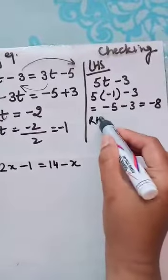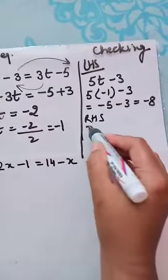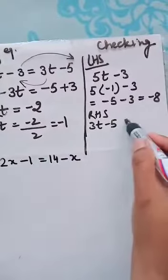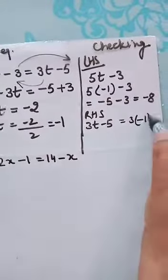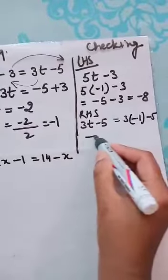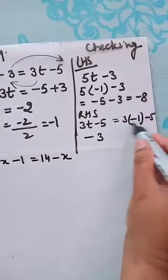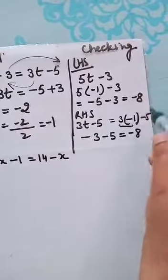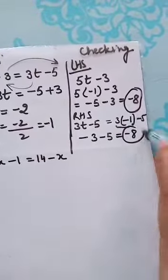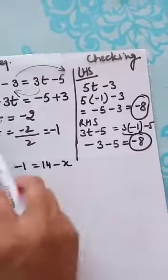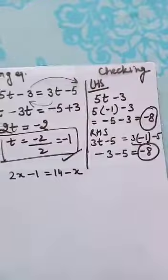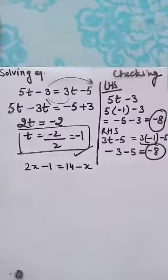Similarly, check RHS. What is the value of RHS? 3t minus 5. And what is the value of t? T is minus 1. So it is 3 into minus 1 minus 5. So 3 times minus 1 is minus 3. This will become minus 3 minus 5, so the answer is minus 8. Now, since LHS and RHS are same, therefore this answer, whatever I have calculated is correct. This is the checking of my own answer.